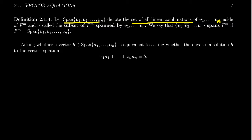In particular, as these vectors v1 up to vn live inside of F^m, the span is going to be a subset of F^m. And we call this the subset spanned by v1, v2, up to vn.